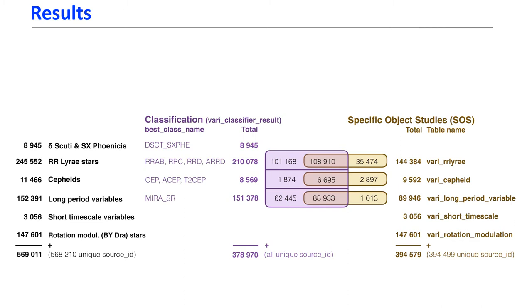This shows the aspect of Gaia as a large collaboration of people. We are relying on specialists of certain variability types in these specific object studies. The classification was also done by several teams: Leuven University and UNED in Madrid.